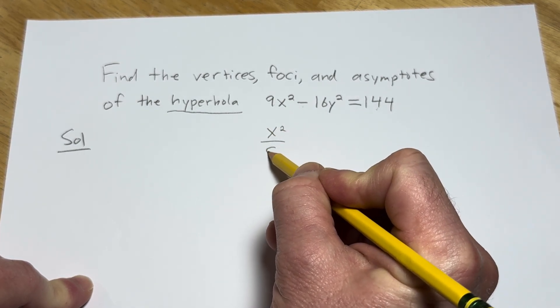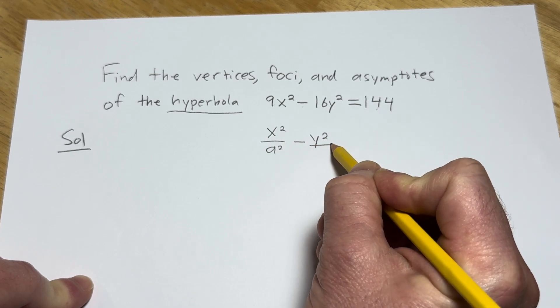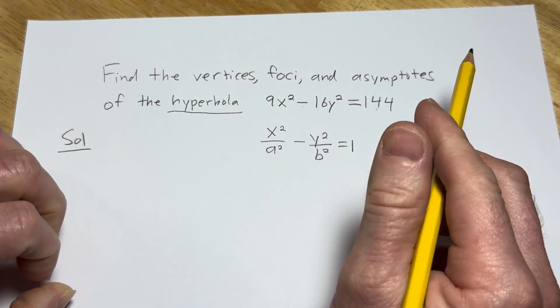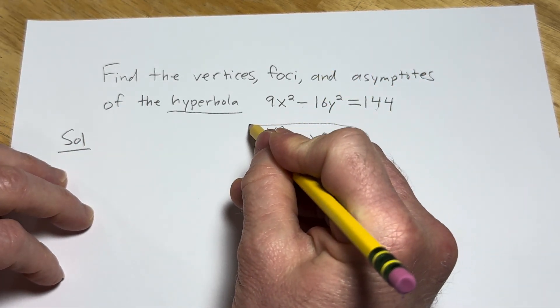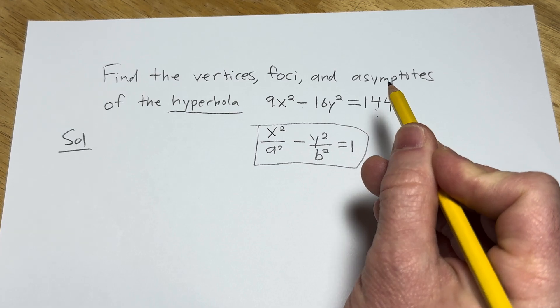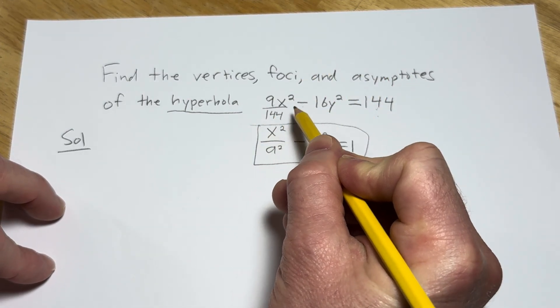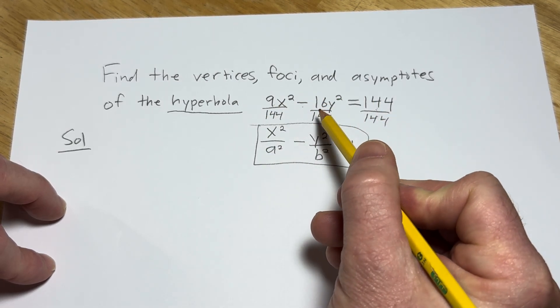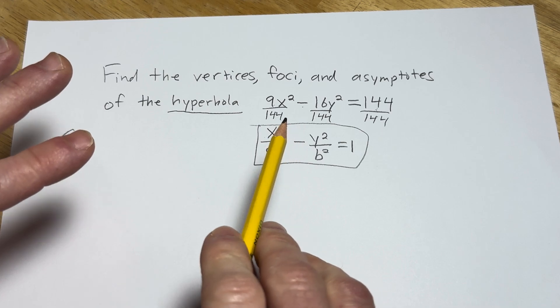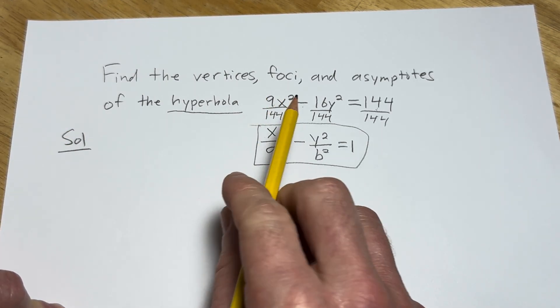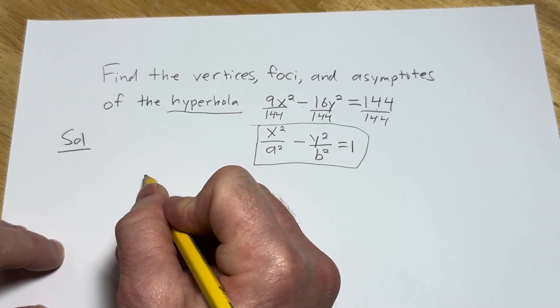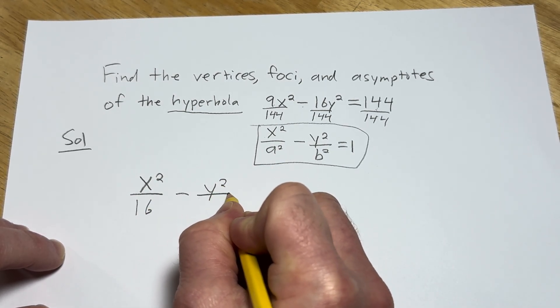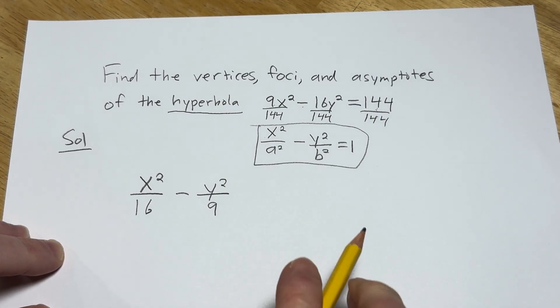And you know that because there's a minus sign, and these numbers are different. This needs to be a 1, because remember, the formula for a hyperbola looks like this: x squared over a squared minus y squared over b squared equals 1. This is the formula for a hyperbola centered at the origin. So we need this to be a 1.